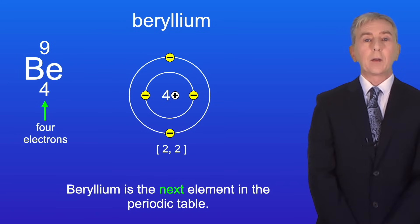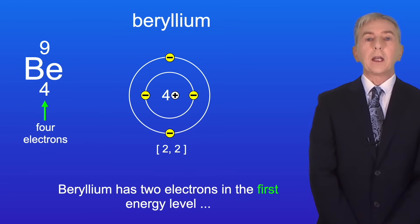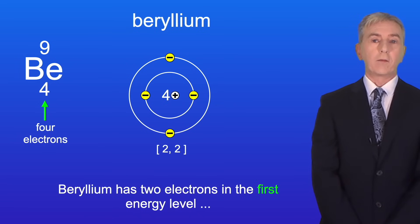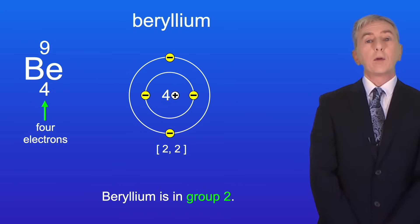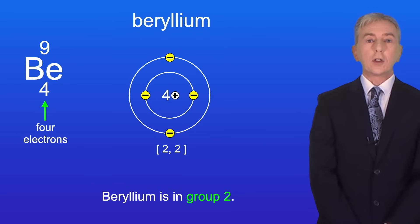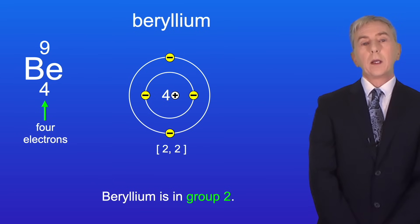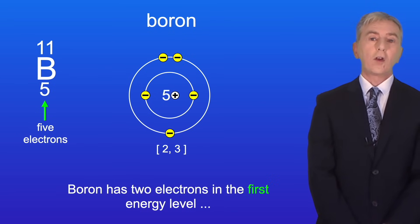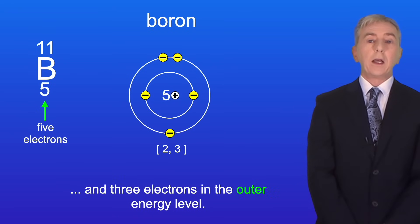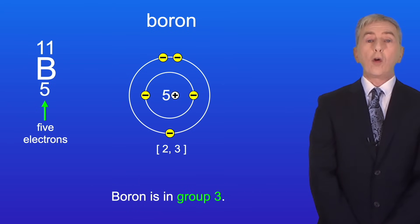Beryllium is the next element. It has two electrons in the first energy level and two electrons in the outer energy level, so beryllium is in group two. Boron has two electrons in the first energy level and three electrons in the outer energy level, so boron is in group three.